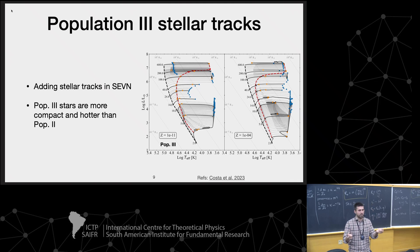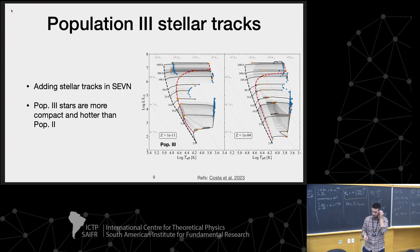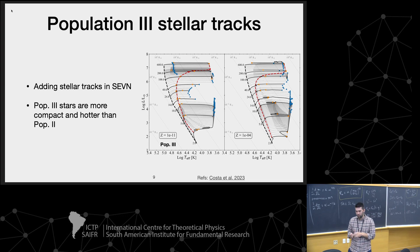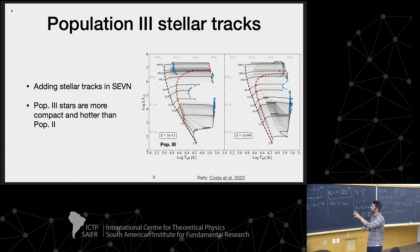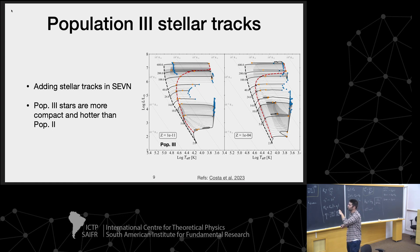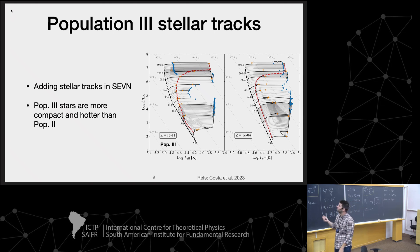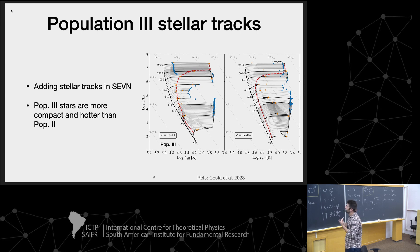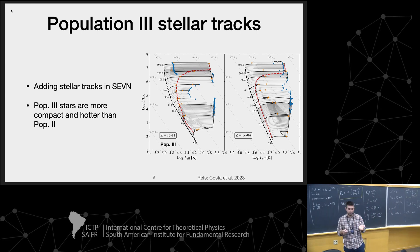SEVN allows you to use stellar tracks. What we can do is evolve stellar tracks of population three stars and inject them into SEVN. This work was done by a colleague of mine, William Acosta. In this plot you see on the left the stellar tracks of population three stars, and on the right the stellar tracks of metal-poor population two stars. Pop three stars are more compact and hotter than population two stars, as you can see in the HR diagram.